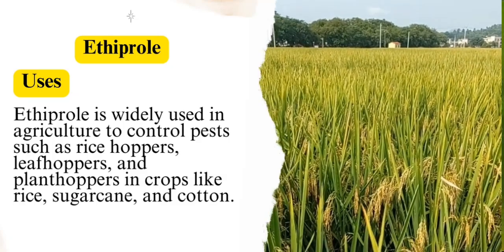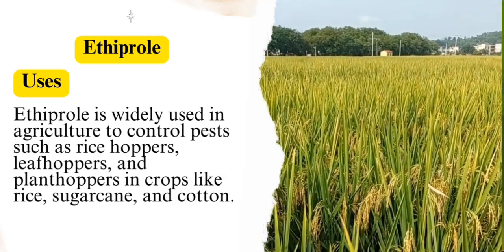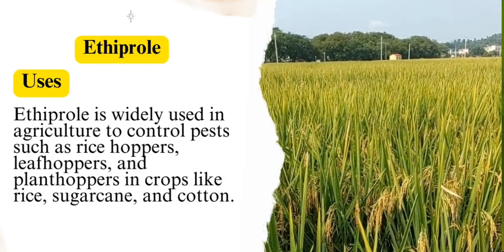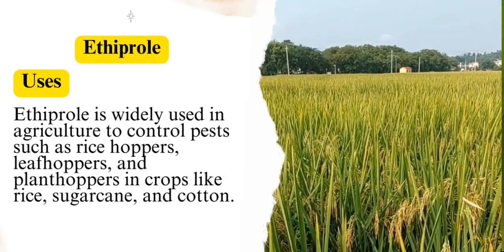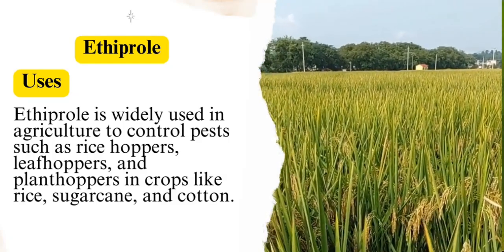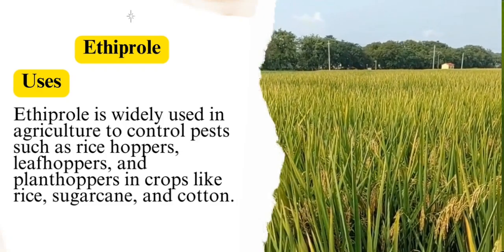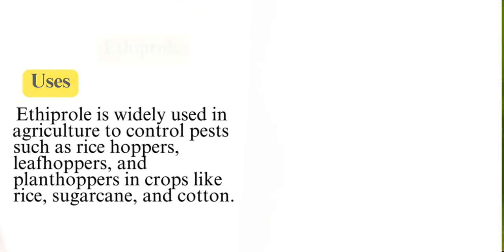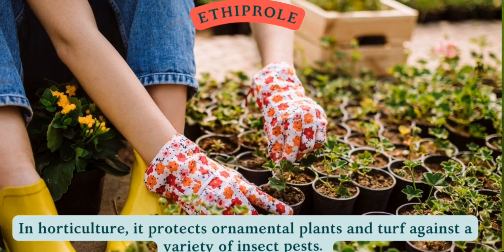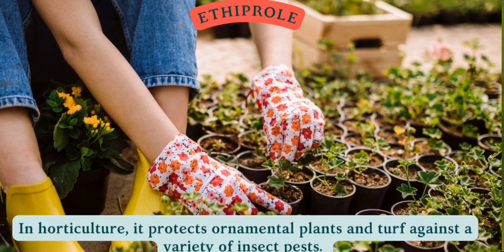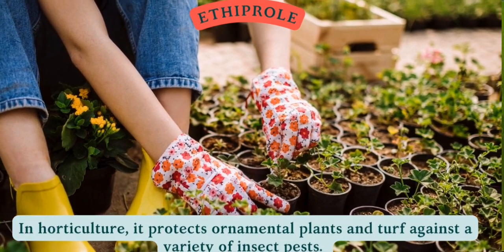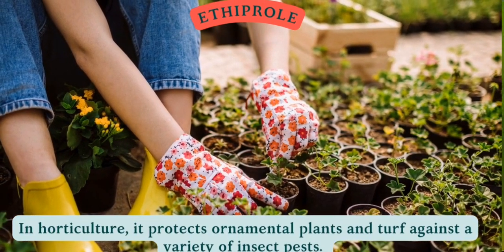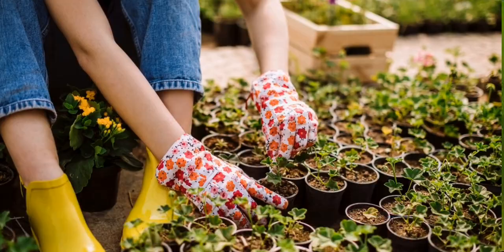Uses. Ethiprol is widely used in agriculture to control pests such as rice hoppers, leaf hoppers, and plant hoppers in crops like rice, sugar cane, and cotton. In horticulture, it protects ornamental plants and turf against a variety of insect pests.